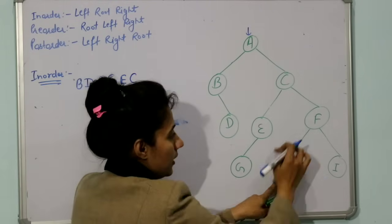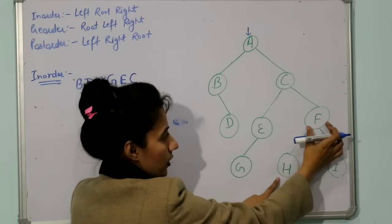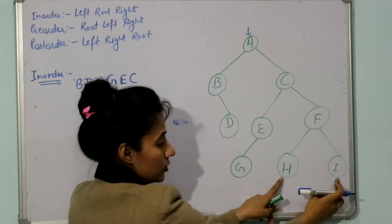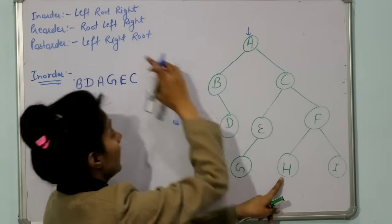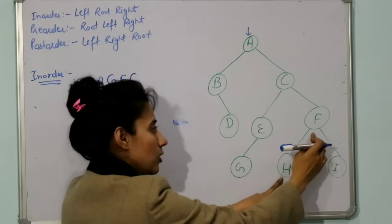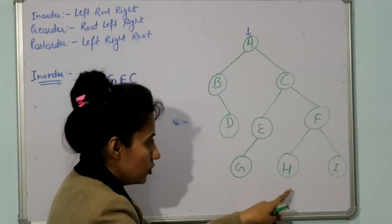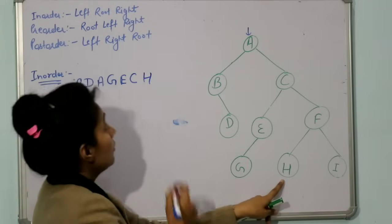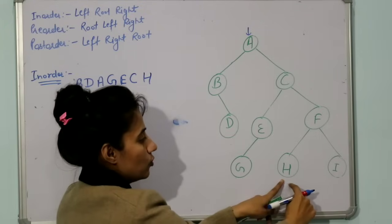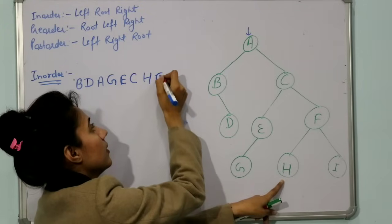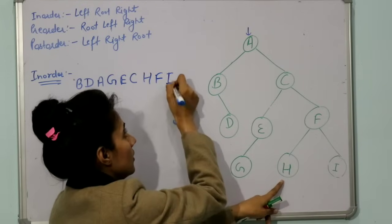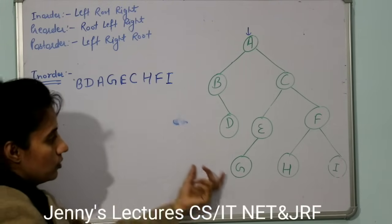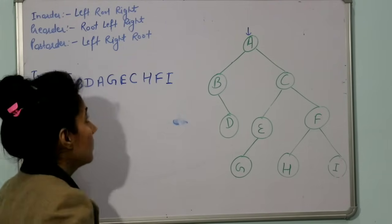For C, left part is now fully traversed, so we print root C. Then we go to the right part — F is the root here, with children H and I. We go to F's left, find H. H's left is null, so we print H. Then backtrack to root F and print F. Then go right and print I. So the in-order traversal of this tree is: D, B, A, G, E, C, H, F, I.